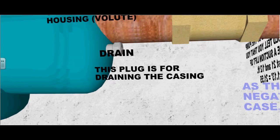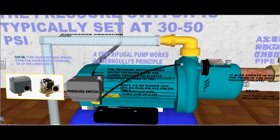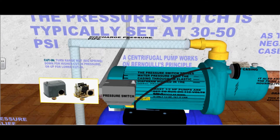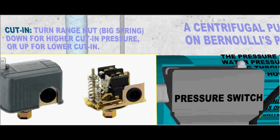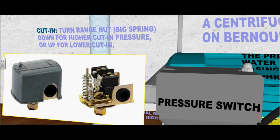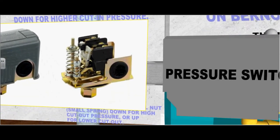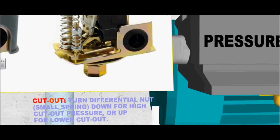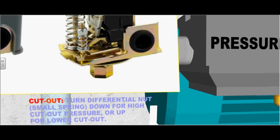This particular drain plug is for draining the casing. This pressure switch is typically set at 30 to 50 psi. Turn the range nut or the big spring down for higher cut-in pressure or up for lower cut-in pressure. Turn the differential nut or small spring down for higher cut-out pressure or up for lower cut-out. This is how you adjust the pressure ranges of the pump.